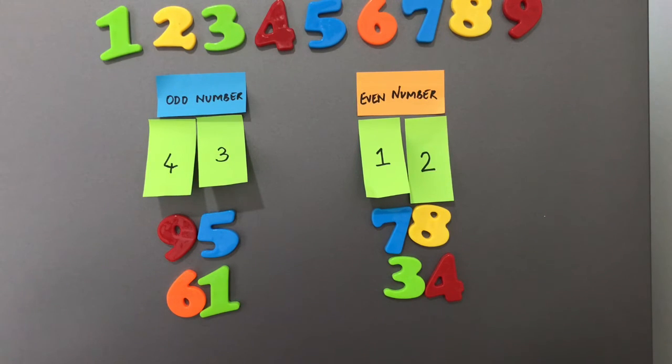So this is one way that right from number zero onwards till number hundred or even greater than hundred. Just by looking at the units place the child can now place the numbers into the odd category or the even category.